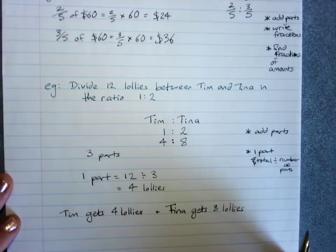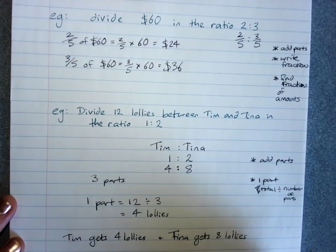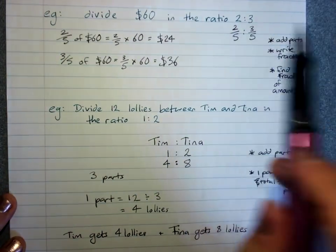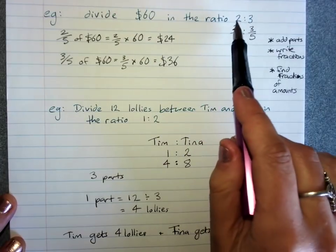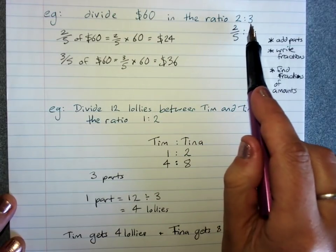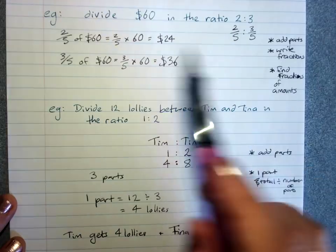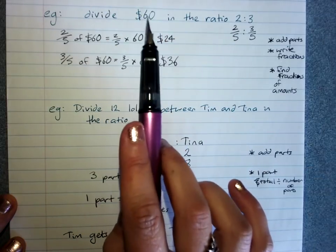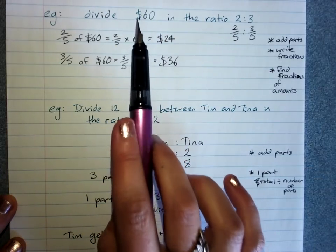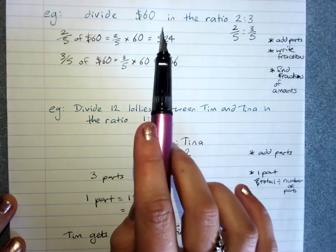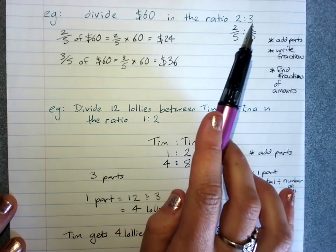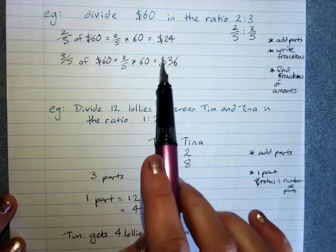Now either method is fine for each question. So if I go back to this question, I could say that's five parts. Sixty divided by five means that one part is twelve dollars. Two parts would be twenty-four dollars. Three parts would be three lots of twelve, which is thirty-six.